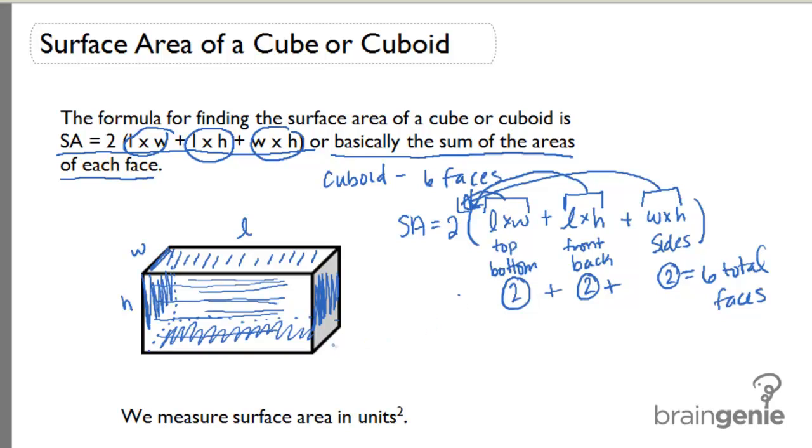Remember, since surface area is an area measurement, we don't measure it in cubic units, we measure it in square units. So again, that surface area formula is simply two times length times width, plus length times height, plus width times height. Or you can simply add up the areas of the faces.